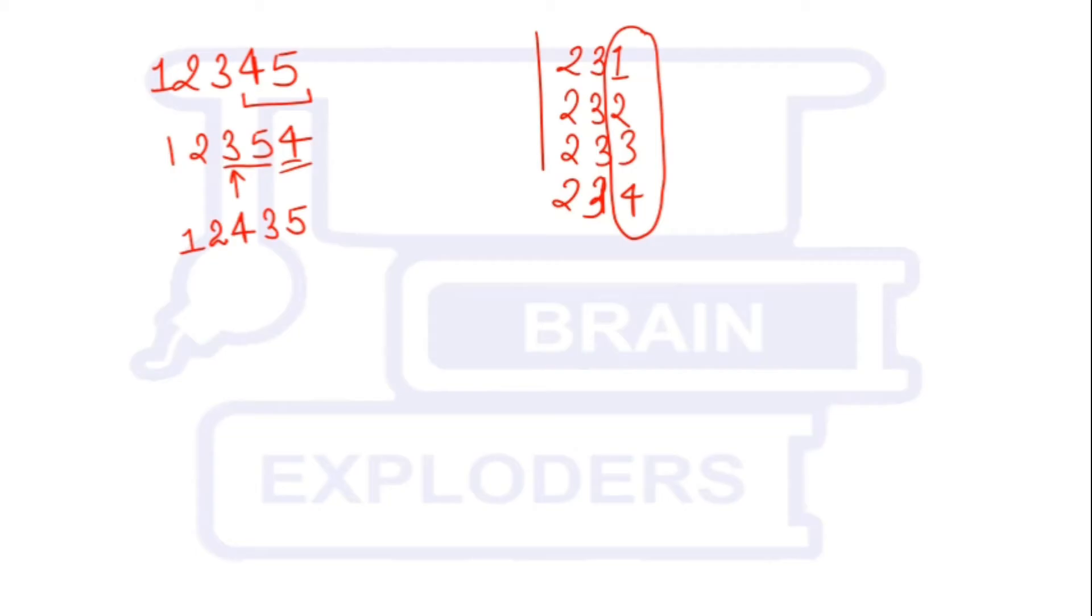Now again we will try to increase the value using this last digit. It is not possible. So we will try to increase the value using last two digits. So value will be 12453. Again we will try to increase the value using last digit, not possible. Using last two digits, not possible. Using last three digits, it is possible: 12534, and then 12543.